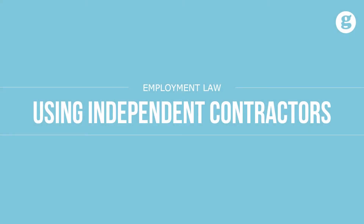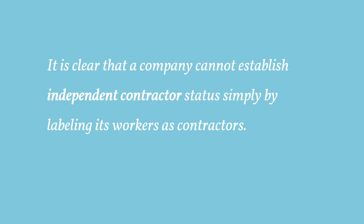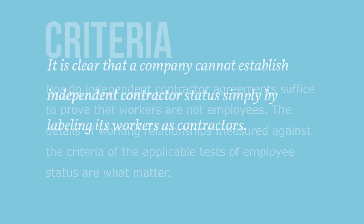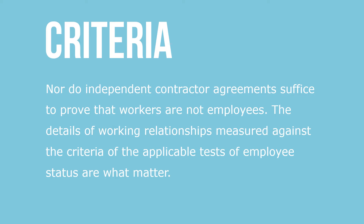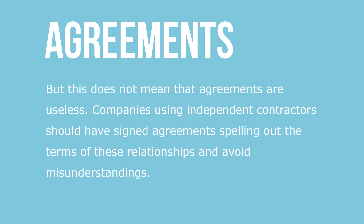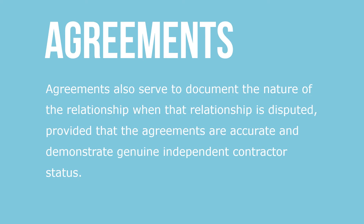A company cannot establish independent contractor status simply by labeling its workers as contractors, nor do independent contractor agreements suffice to prove that workers are not employees. The details of working relationships, measured against the criteria of applicable tests of employee status, are what matters. However, agreements are not useless — companies should have signed agreements spelling out the terms of these relationships to avoid misunderstanding, and they serve to document the nature of the relationship when it is disputed, provided they are accurate.